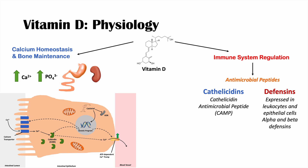These antimicrobial peptides are expressed in leukocytes and epithelial cells, with alpha and beta defensins. Vitamin D can induce cathelicidins like CAMP, and this antimicrobial peptide can bind to bacteria and reduce bacterial functioning.